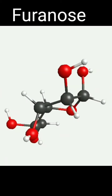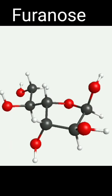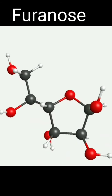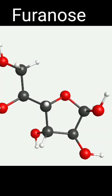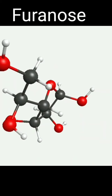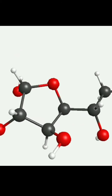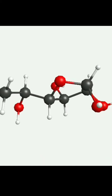Evidence says that glucose is a pyranose ring structure, not a furanose ring structure. Therefore, we have to check the hydrogen and hydroxide configurations. We check carbon number 1, carbon number 2, then carbon number 3, and carbon number 4. Oxygen is at position 5, and carbon number 6 is outside the ring. We call this the furanose structure. Thank you.